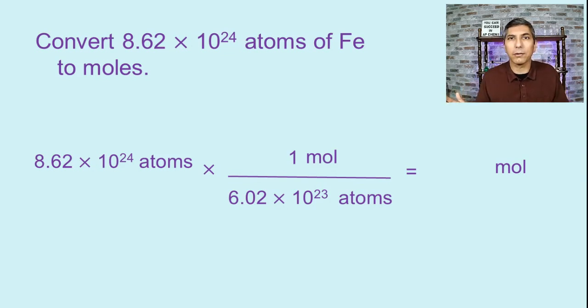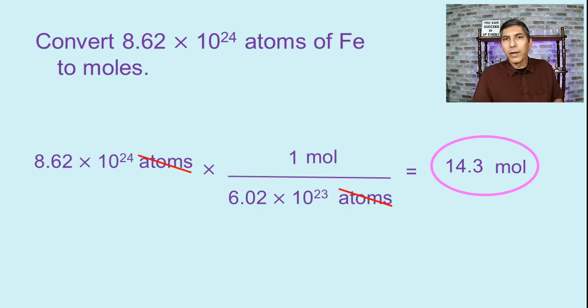Remember, in any conversion factor, the numerator has to be equivalent to the value in the denominator. Now I can cancel atoms top and bottom. On my calculator, 8.62 times 10 to the 24th divided by 6.02 times 10 to the 23rd equals 14.3. So this quantity equals 14.3 moles of iron. I would recommend you work the problems along with me using your own scientific calculator, because one of the most common mistakes students make is calculation errors. They'll forget how to use their calculator on these scientific notation problems, so make sure you can do that.